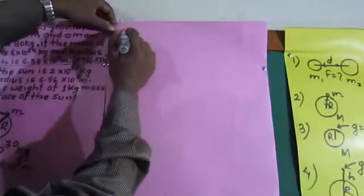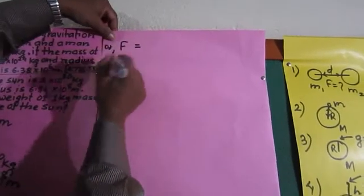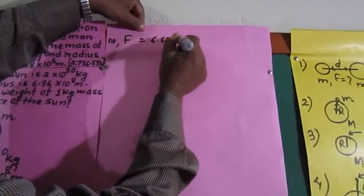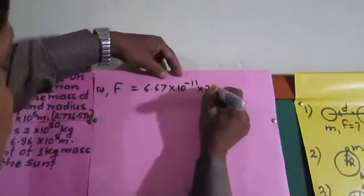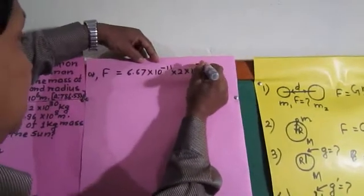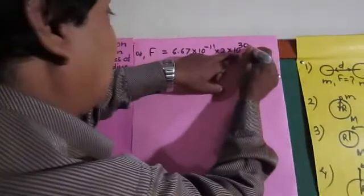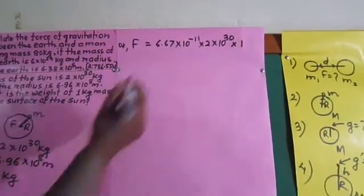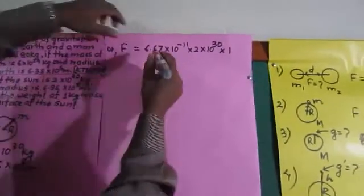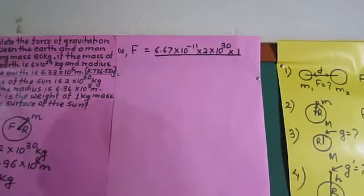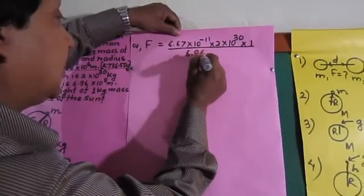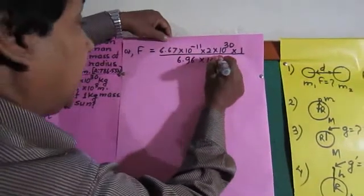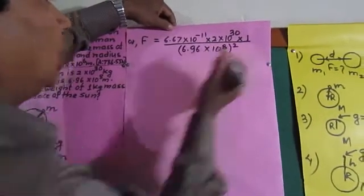Now I am going to put in the values. F is equal to: G is 6.67 × 10⁻¹¹, capital M is 2 × 10³⁰ kg — this is the mass of the sun — and small m, the mass of the body lying on its surface, is 1 kg. We are not writing units in the process. This is divided by R squared: R is 6.96 × 10⁸ meter, so it is (6.96 × 10⁸) whole squared.